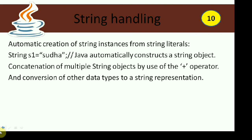Concatenation of multiple string objects using the plus operator — I've made a separate video for that and will give the link in the description. The concatenation operator also converts data types into string representations when you use plus. This is called implicit operator overloading. Java does not support explicit operator overloading by programmers, but implicitly the language has operator overloading, and one such example is the plus operator.